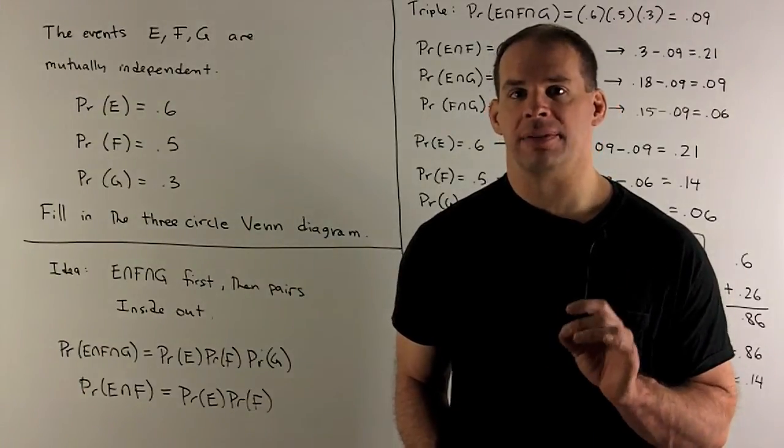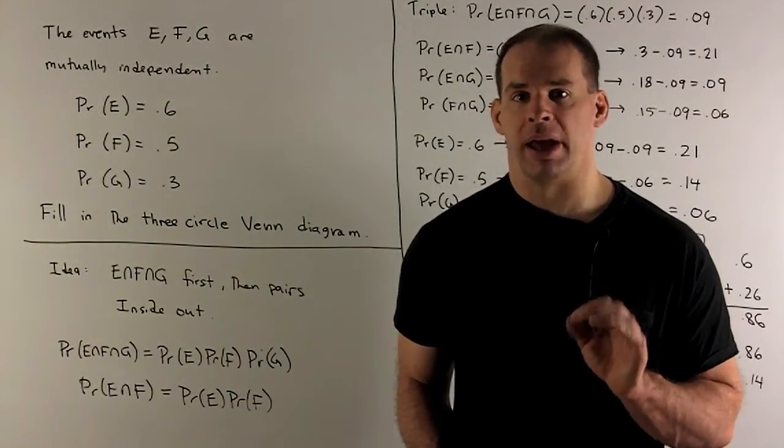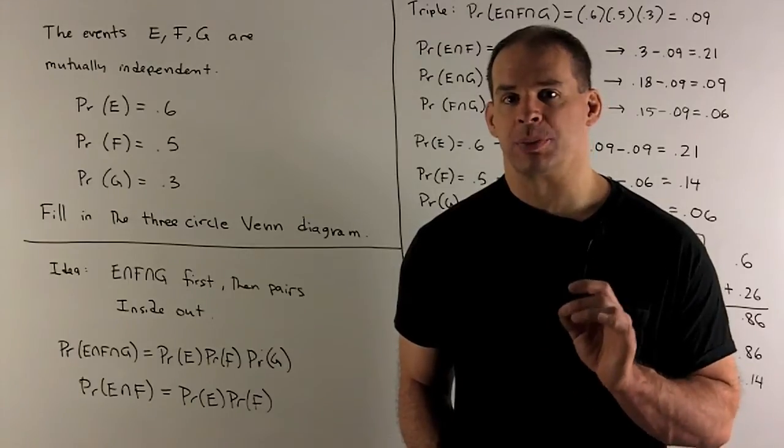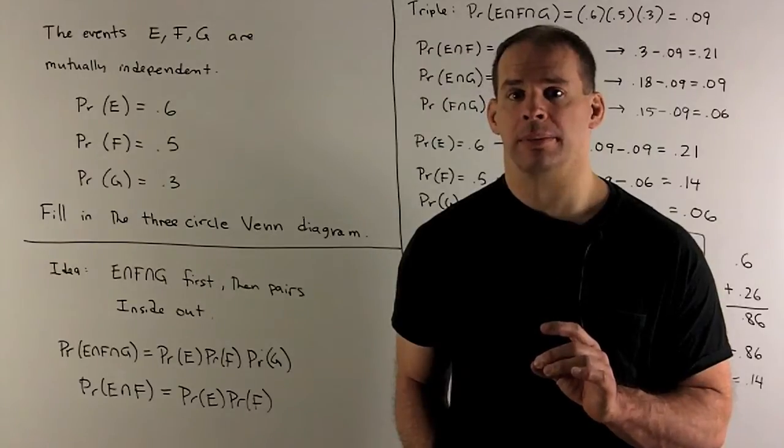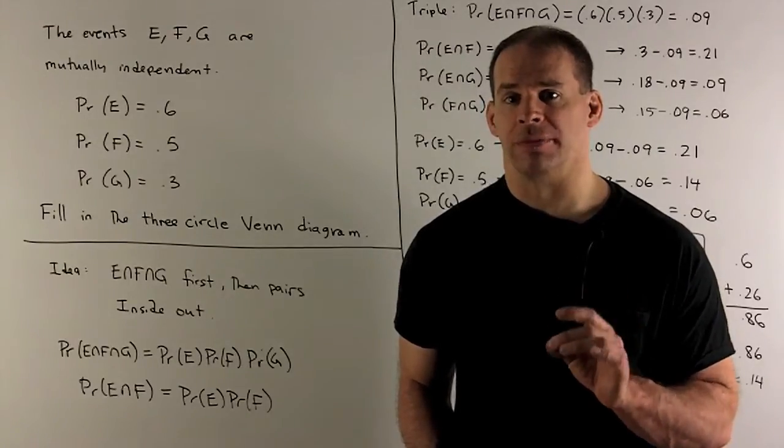Three events E, F, and G are mutually independent. Probability of E is 0.6, probability of F is 0.5, probability of G is 0.3. Fill in the three-circle Venn diagram.